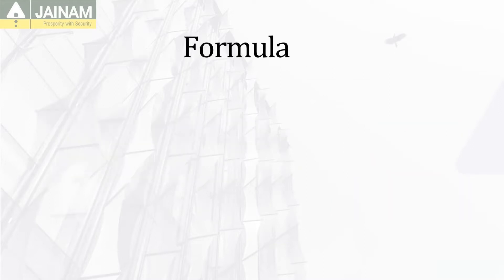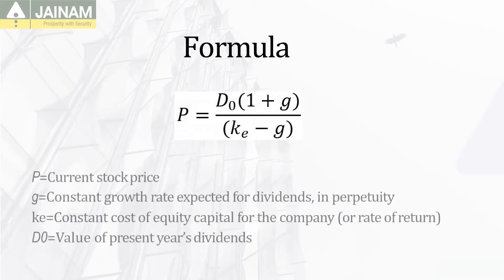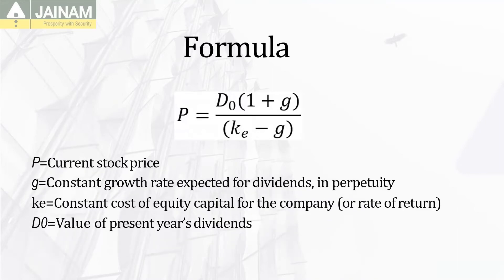Coming to the formula of the dividend discount model, this is the formula for calculating the price of a stock using the DDM model. Here P is the price of the stock which we have to calculate, G is the dividend growth rate, KE is the cost of equity or the required rate of return, and D0 is the current year's dividend.